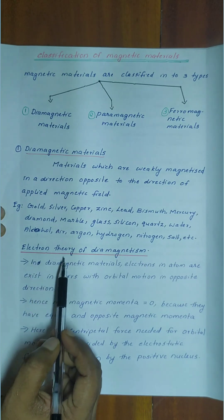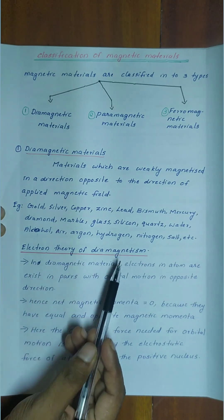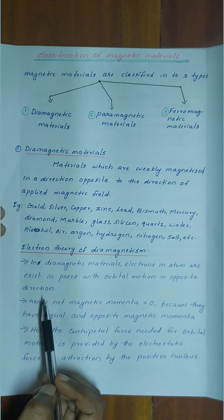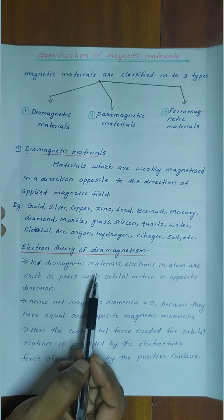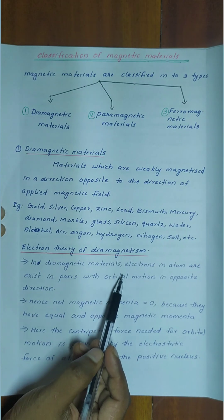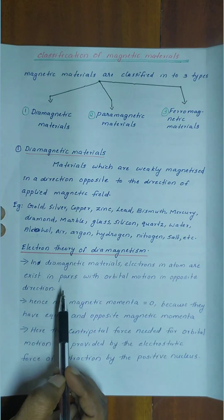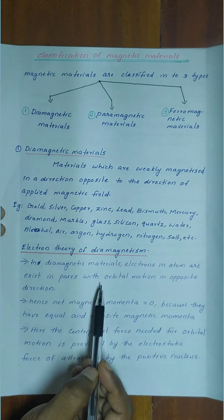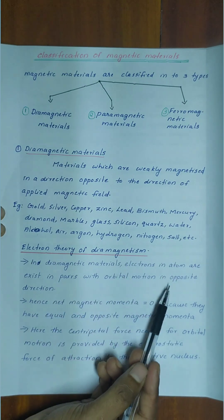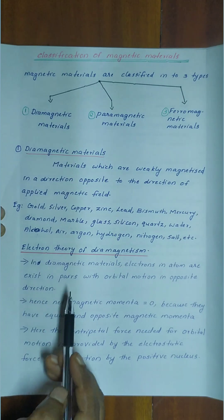Let's discuss what we have in the Electron Theory of Diamagnetism. In diamagnetic materials, electrons in atoms exist in pairs with orbital motion in opposite directions.